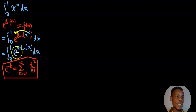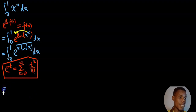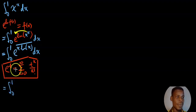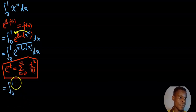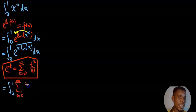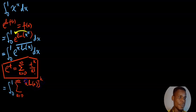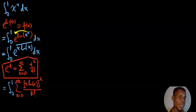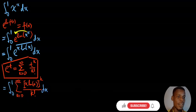Using that fact where t is x times the natural logarithm of x, we can rewrite the integrand as the integral from 0 to 1 of the sum as k goes from 0 to infinity of x times the natural logarithm of x, that whole thing raised to the power of k, divided by k factorial, times dx.